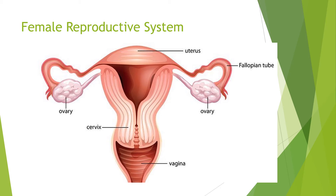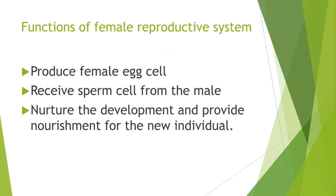The uterus serves as the site of egg implantation — it is where the fertilized egg develops. It is also where the thick lining builds up and becomes menstruation, and if it does not become menstruation, it is where your baby develops. We also have the vagina — it receives the penis of the male during mating.